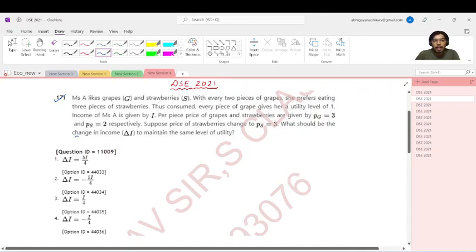Mrs. A likes grapes and strawberries. With every two pieces of grapes, she prefers eating three pieces of strawberries. That means the grape to strawberry ratio is always two is to three. So this is a fixed proportion. What does this tell you? That grapes and strawberries are basically perfect complements for this person. This is the direct information that we get.